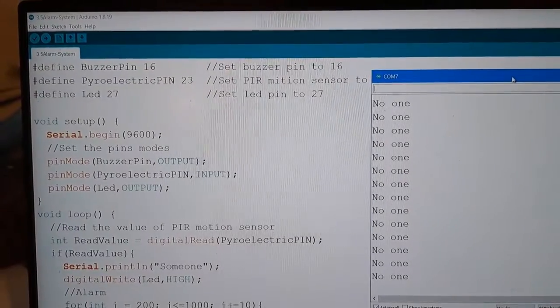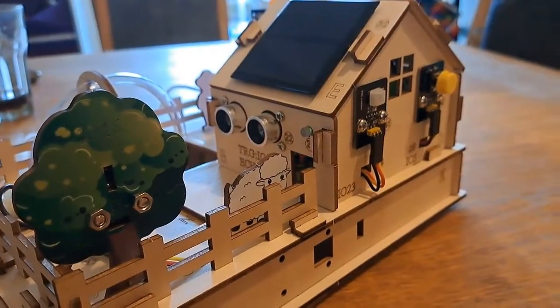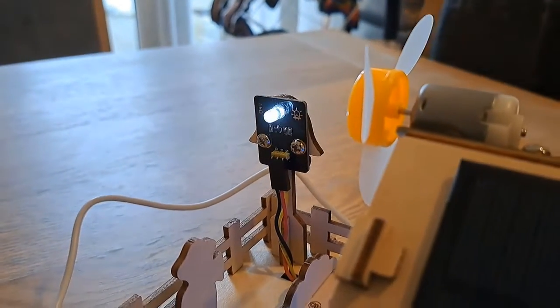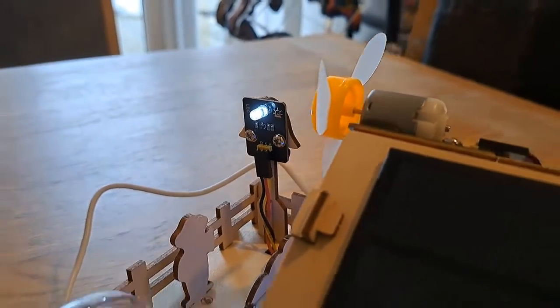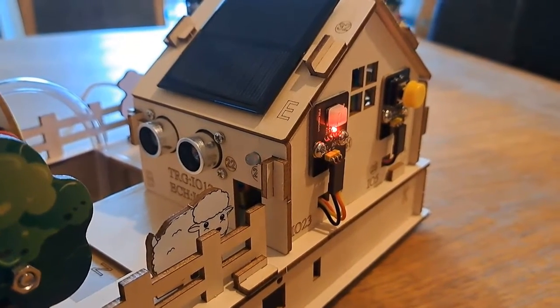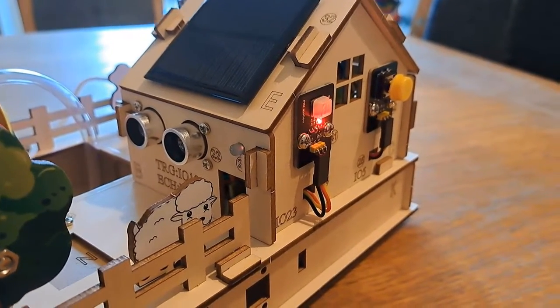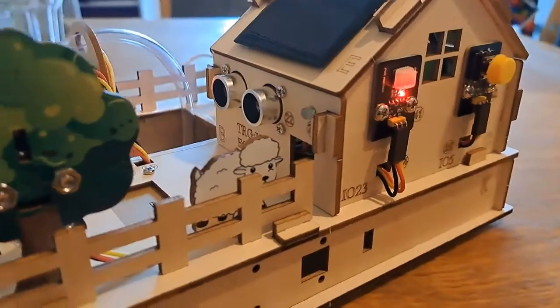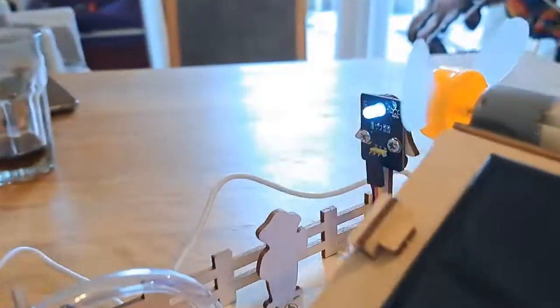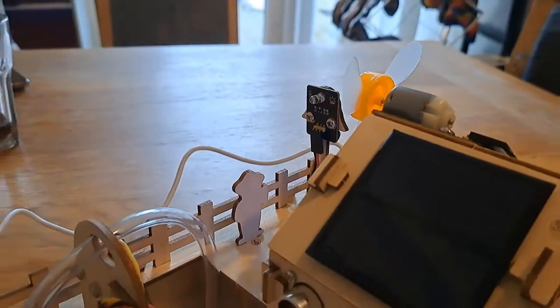This is the code for the alarm system. Essentially, there is a PIR sensor there. And if it notices the temperature change, then it makes the buzzer come on and it lights up this LED. So when it's got the red light on, it means that it doesn't see anyone at the moment. But if I move closer to it, the red light goes off and the buzzer comes on and the LED comes on.